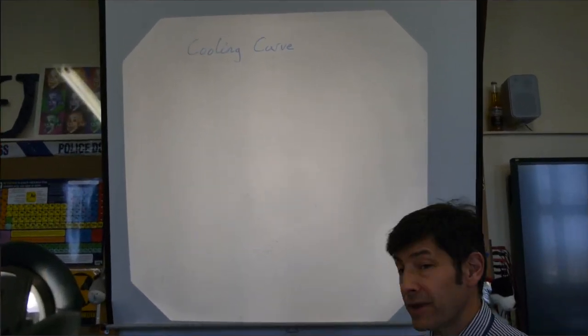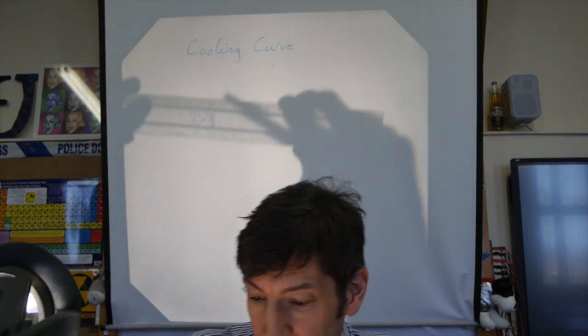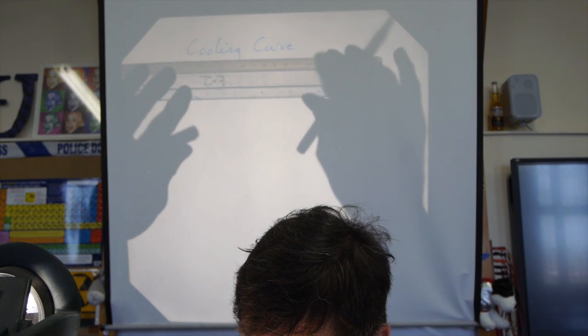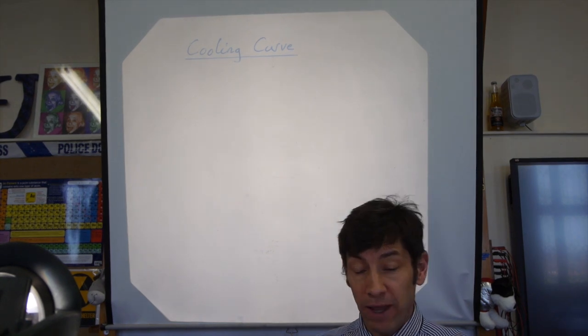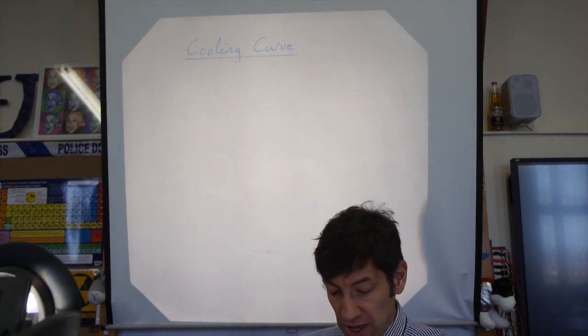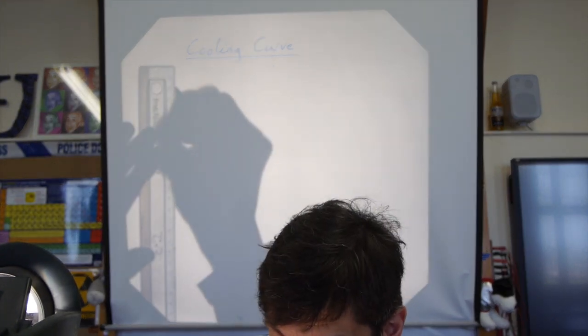I've collected the data — temperature every two minutes — and run the experiment for 22 minutes. Now we're going to graph our data. Looking at our results, I've got a data table to share with you. I want you to plot a graph of the data. It doesn't matter if you haven't got graph paper; any white sheet will do, just try your best. Make sure to space the numbers out evenly on your axes.